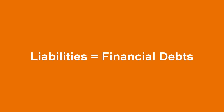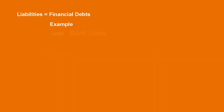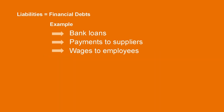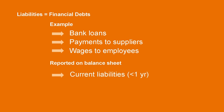We can think of liabilities as financial debts and obligations that a company has committed to settle in the future. Examples include bank loans, wages owed to employees, or payments that are owed to suppliers. All of the company's liabilities are reported on the balance sheet as either current liabilities, to be settled within one year, or long-term liabilities, to be paid beyond that one-year time frame. Understanding how to manage and appropriately account for these liabilities is critical to the financial health of an organization.